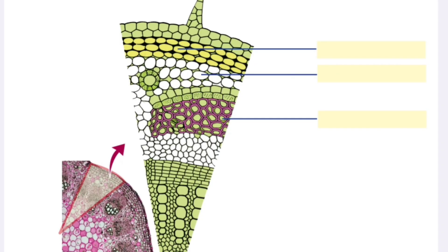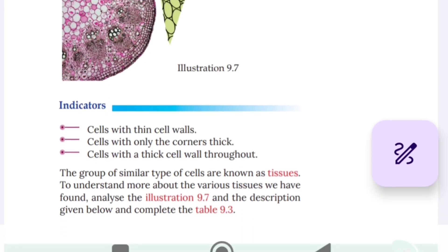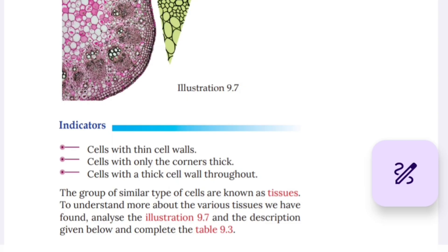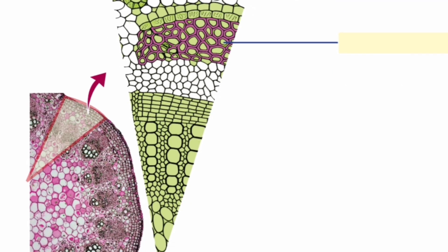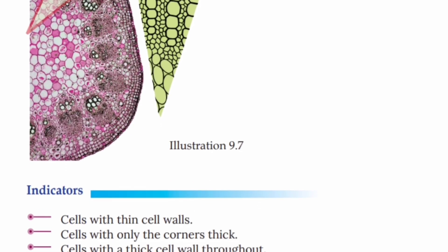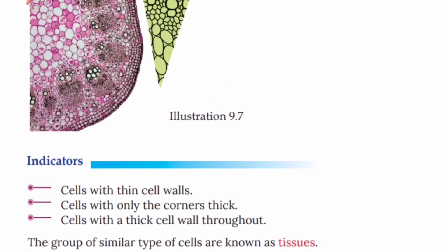Here are the cells and the types of cells. The group of similar types of cells are known as tissues.